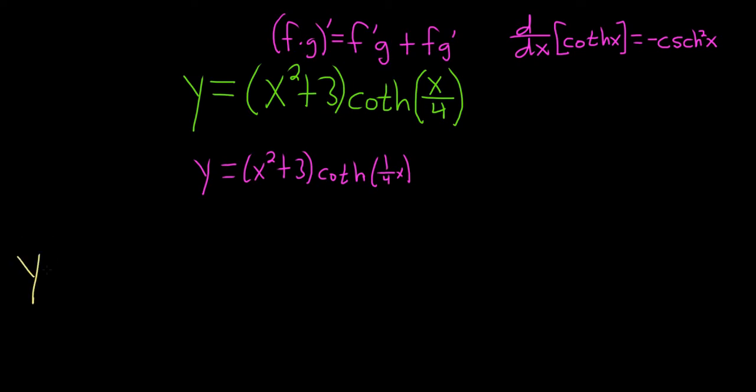Let's do this problem. So y prime is equal to the derivative of the first piece. This is our first piece. So 2x times the second piece, the hyperbolic cotangent of one-fourth x, plus the first piece. So x squared plus 3 times the derivative of the hyperbolic cotangent of x.